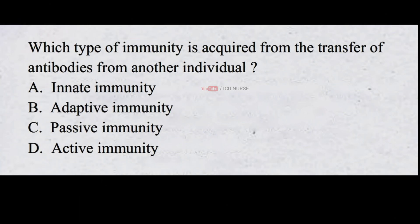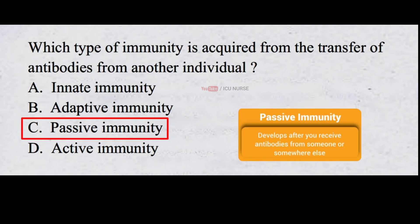Which type of immunity is acquired from the transfer of antibodies from another individual? A. Innate immunity B. Adaptive immunity C. Passive immunity D. Active immunity. The correct answer is C. Passive immunity. The immunity that is acquired from the transfer of antibodies from another individual is called passive immunity.